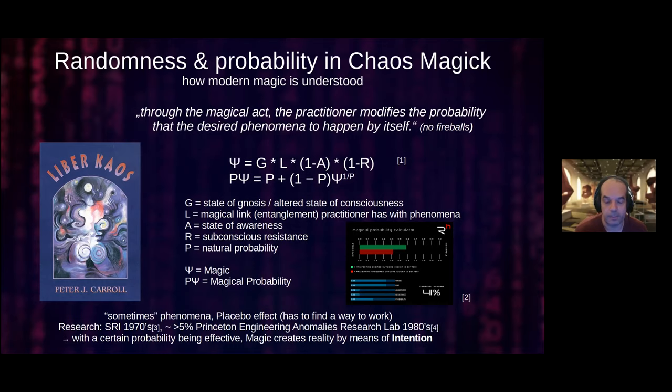In chaos magic, you are not able to shoot fireballs because the probability to imagine that is not that high — that wouldn't really work. I found this book, Liber Chaos, by Peter Carroll. He's a founder of what was called the Illuminates of Thanateros, a real-life magic guild founded around 1970. He came up with this formula. Formulas can be scary sometimes, but this one is actually quite simple — it multiplies a few values that are between zero and one.